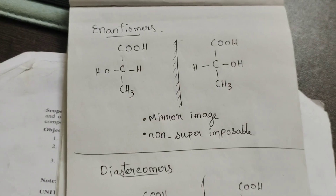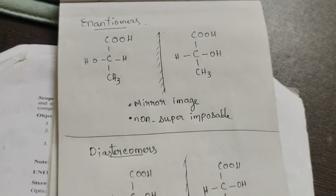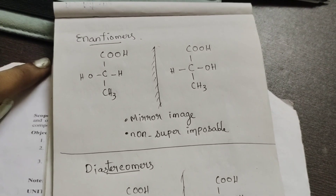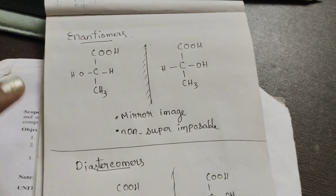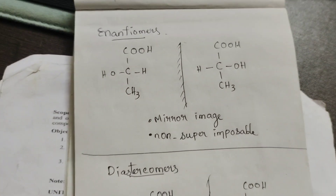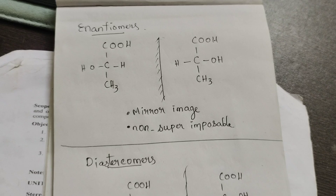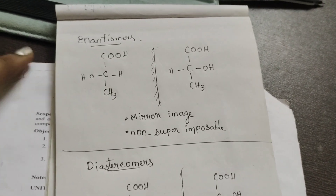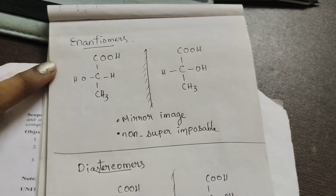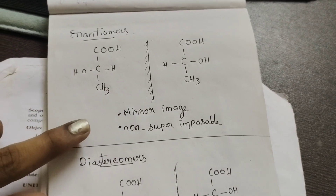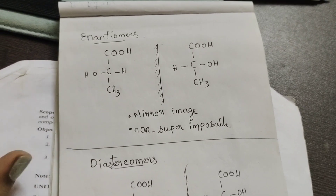If it rotates, we will use optical isomers. Now we will take optical isomers: diastereomers and enantiomers. Enantiomers and diastereomers have a little difference. For enantiomers, there is a mirror image and it is non-superimposable.